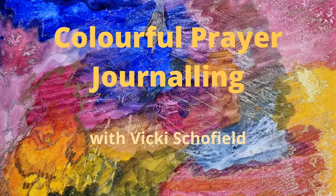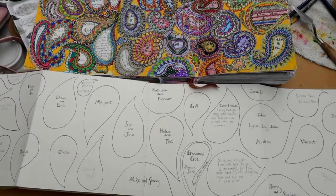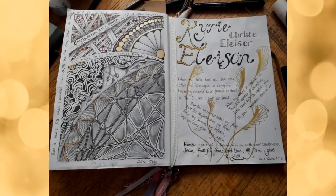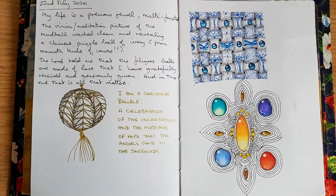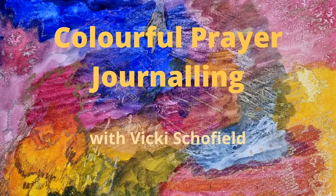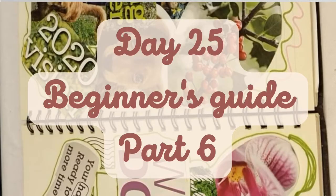Thank you for joining us. Hi, I'm Vicki Schofield. Welcome to my 40 Days of Colourful Prayer Journaling. Today I'm going to be looking at how to draw a square cut gem. I'm going to use blue pencils for this. So I've got blues, black and a pale yellow for the highlights.